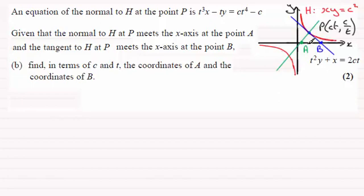So if we start with A, let's just put an intro here for A. We know that the equation of the normal then is t cubed x minus ty equals ct to the power 4 minus c. And all we've got to do is just say when y equals 0.